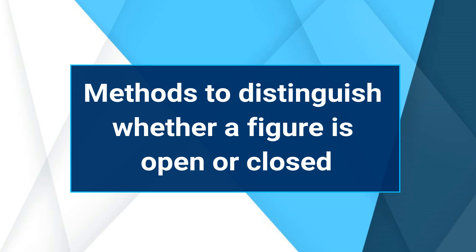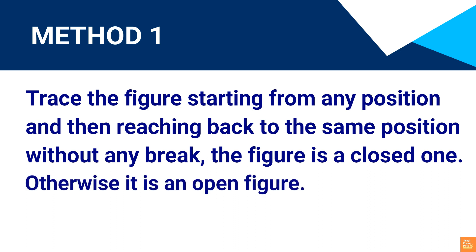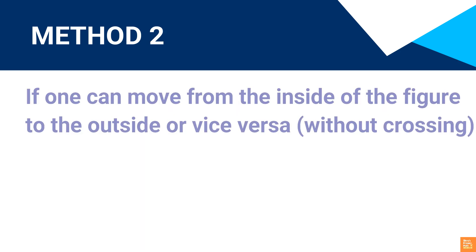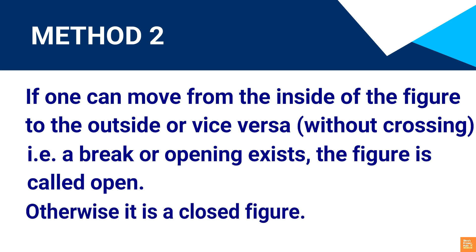Methods to distinguish whether a figure is open or closed: Method 1 — Trace the figure starting from any position and then reaching back to the same position without any break. The figure is a closed one; otherwise, it is an open figure. Method 2 — If one can move from the inside of the figure to the outside or vice versa without crossing a break or opening, the figure is called open; otherwise, it is a closed figure.